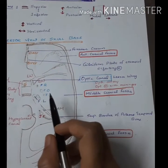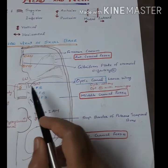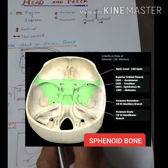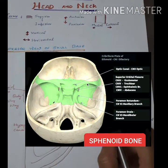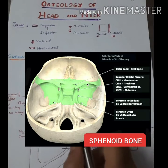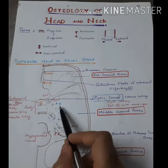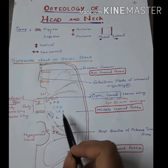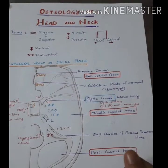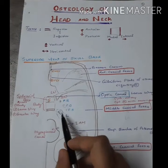Next we can look into the other canals and foramina. In the lesser wing of the sphenoid bone we can see the optic canal, through which the ophthalmic artery and optic nerve with meninges pass. The greater wing of the sphenoid consists of three foramina: foramen rotundum, foramen ovale, and foramen spinosum.